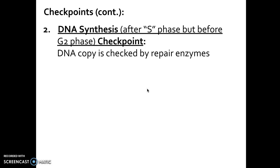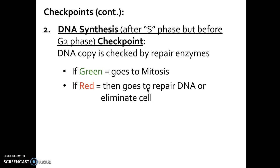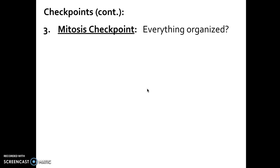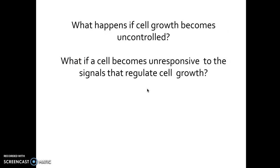The second checkpoint is the DNA synthesis checkpoint, occurring in the S phase, where we check that DNA is copied correctly. If it is, the cell gets a green light and proceeds to mitosis; if not, we try to repair the DNA, and if it can't be repaired, apoptosis occurs. The final checkpoint is at the mitosis stage, checking whether chromosomes lined up correctly in metaphase and split apart correctly in anaphase. If everything happened as it should, the cell gets the green light to proceed to cytokinesis; if not, the cell is eliminated.